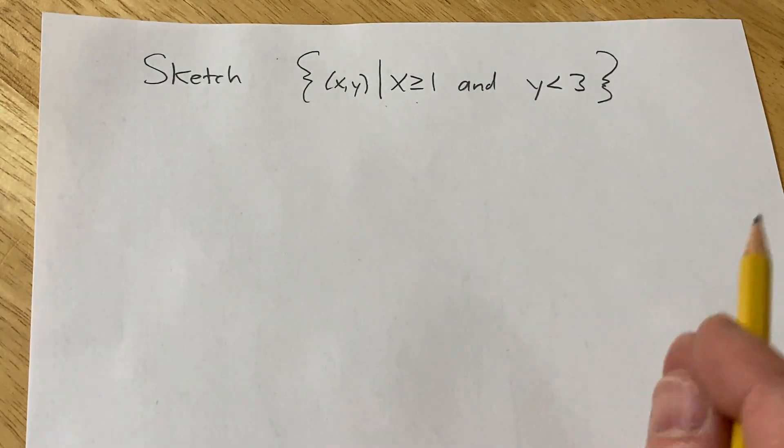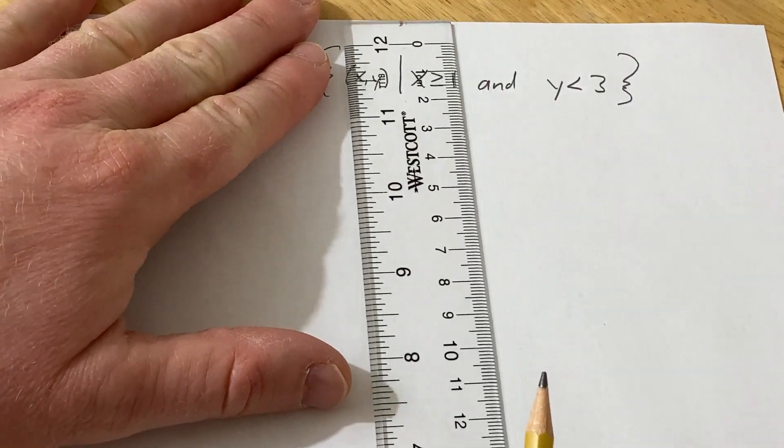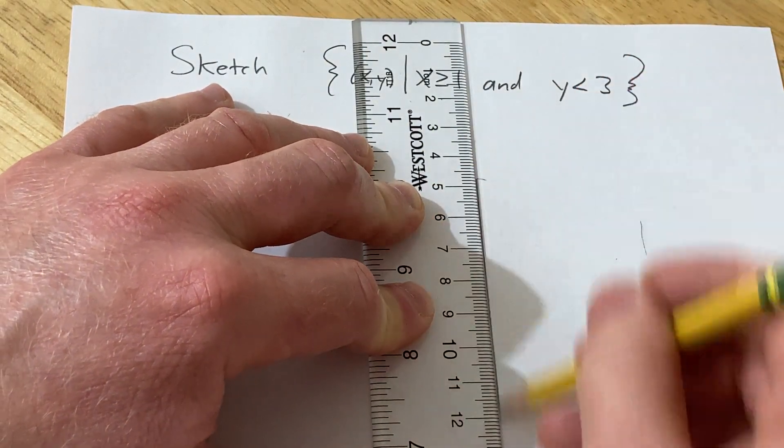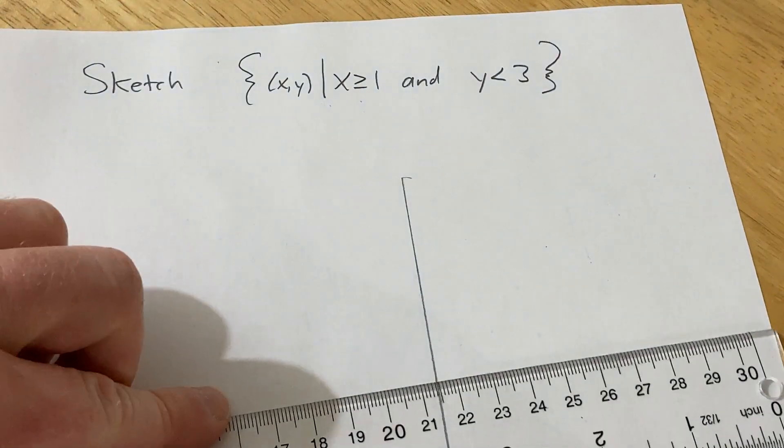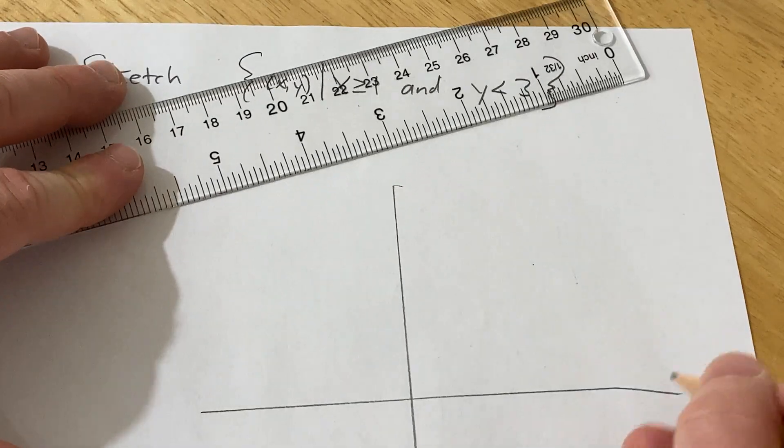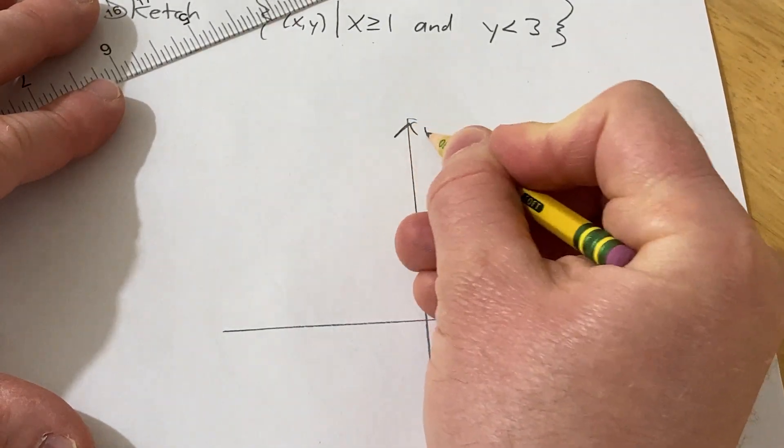I'm going to start by drawing a picture of the x-y plane. I've got my ruler here to help me draw some straight lines, so I've got one there, and then let's do one over here as well. There's x and there is y.